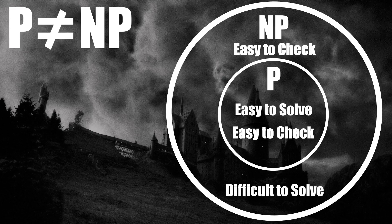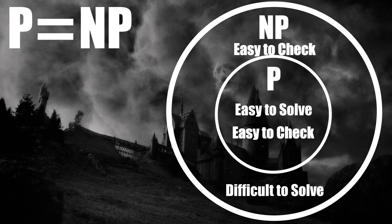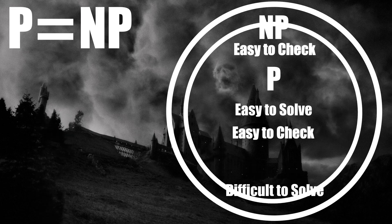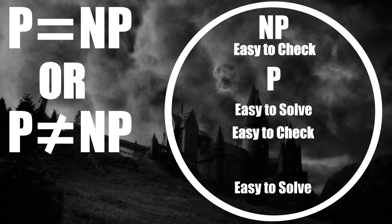On the contrary, those who believe that P does equal NP think that both these sets of problems are the same — easy to solve and check in polynomial time. Yet, no one has been able to prove which argument is correct.